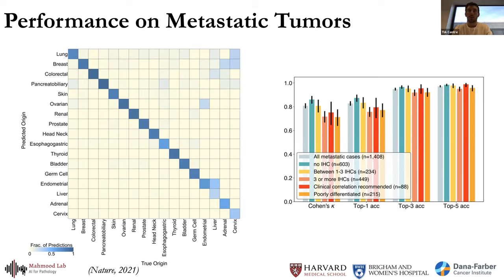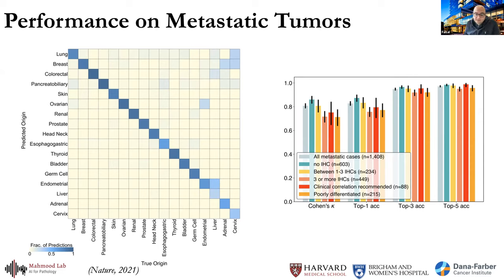A follow-up question asks whether misclassifications are understandable — for example, whether morphologically similar cancers like different adenocarcinomas get confused. Faisal confirms this is exactly what they found in their analysis of misclassified cases: when morphology is similar or cases are so poorly differentiated that no differentiation is possible, the model fails in the same way pathologists with many years of experience would also find it difficult.